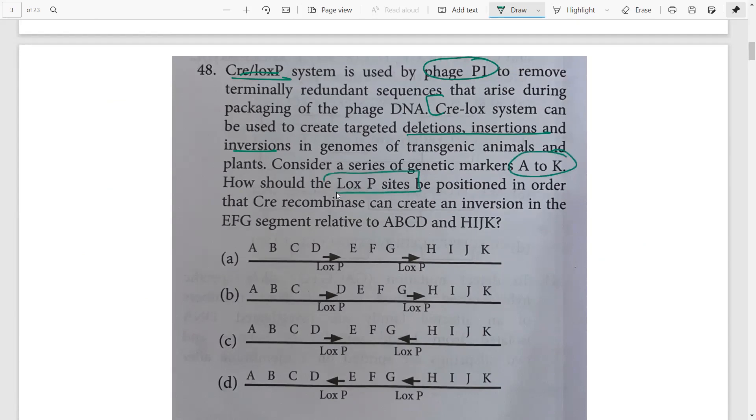How should you place the LOXP sites to create an inversion in the EFG segment relative to ABCD and HIJK? You want to invert EFG. We know that if you want an inversion, it is Case 3. How should the LOXP sites be placed? Definitely in the opposite direction.